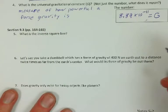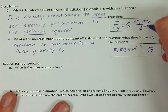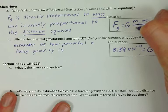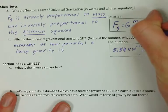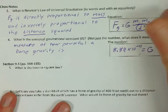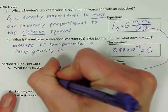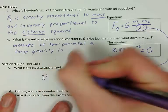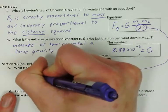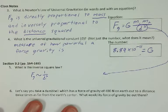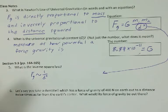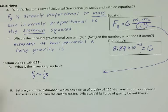Alright, number five. What's the inverse square law? So the inverse square law is this part right here, this over D squared business. The inverse square law is this. It's 1 over D squared. So the force of gravity is proportional to 1 over D squared. It basically just says that things get smaller by the square of the distance.